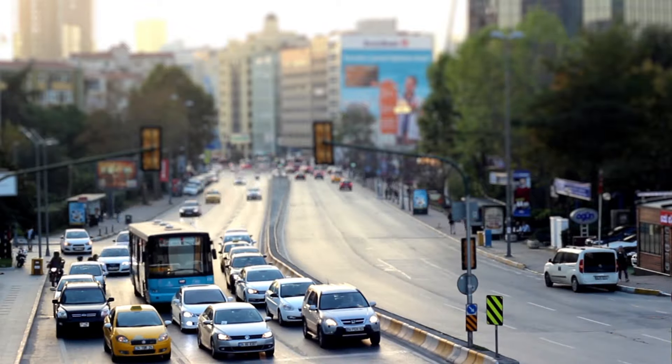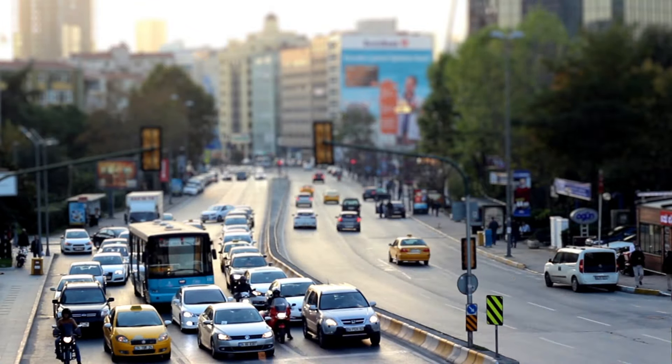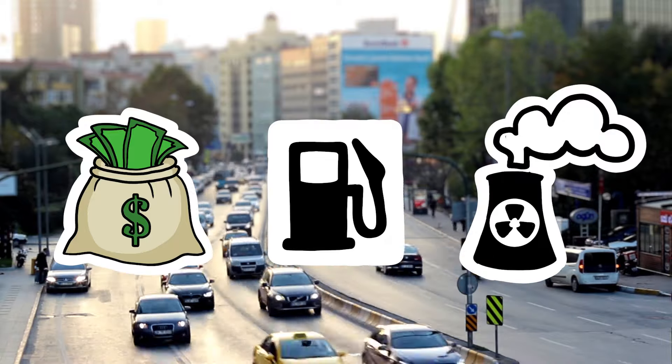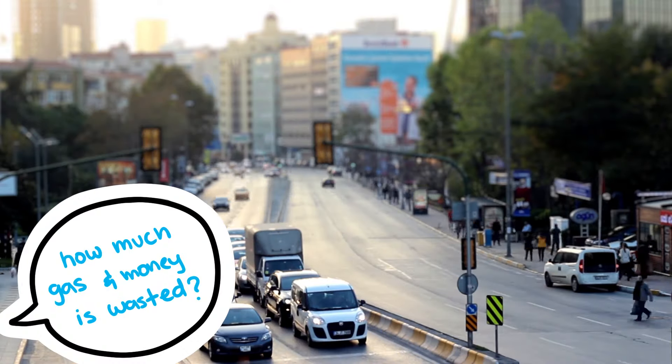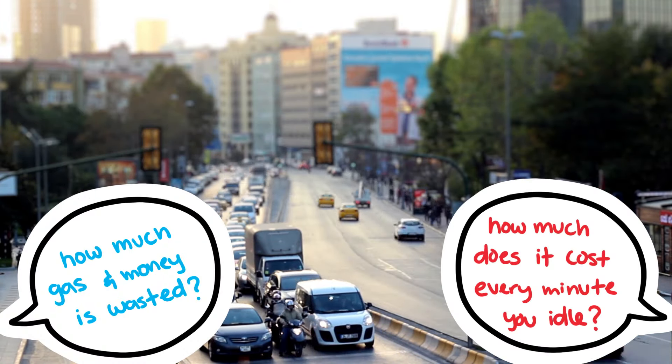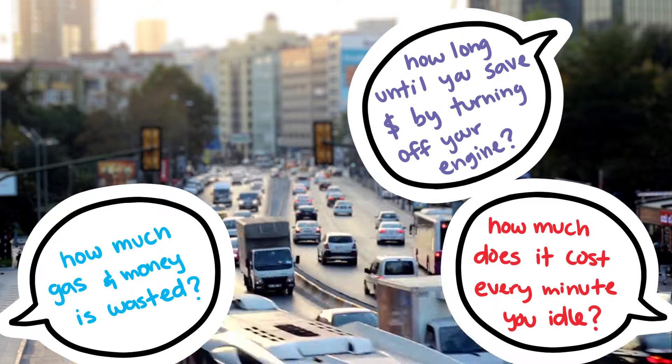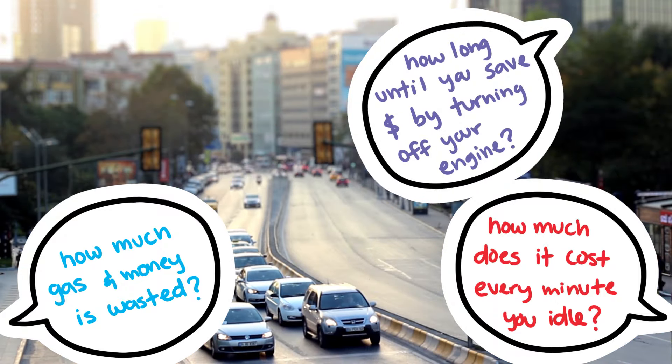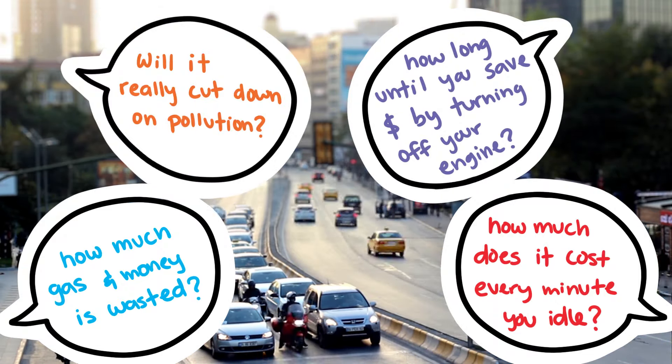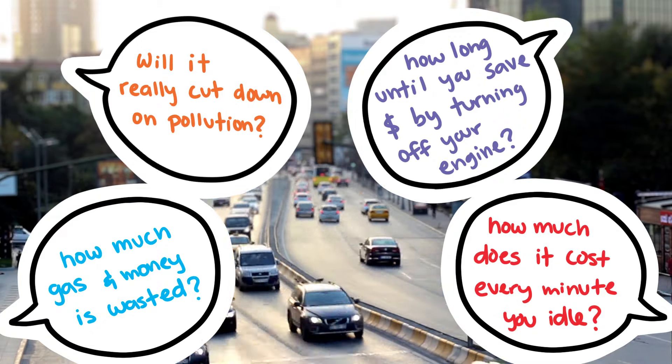We spend a lot of time idling gas vehicles at stoplights, and that wastes money, fuel, and pollutes the environment. But how much gas and money is wasted this way? What does it cost you every minute you idle at a light? How long until you save fuel and money by turning off your engine? And how long do you need to idle to actually cut down on pollution?